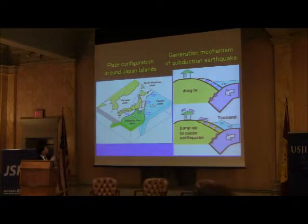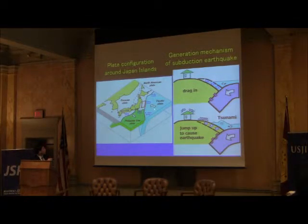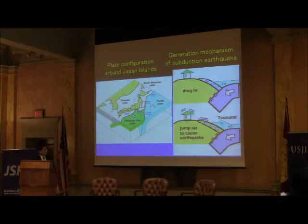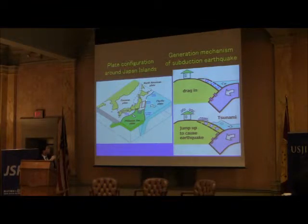This is the plate configuration around Japan. This earthquake took place between the Pacific Plate and the North American Plate. The only difference is that this focal area was very wide — nearly 500 km by 200 km.